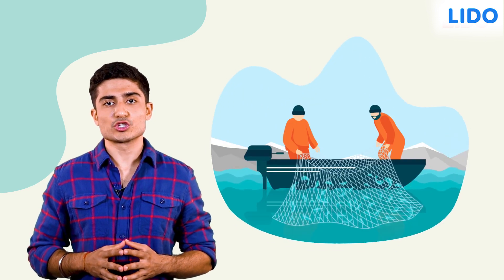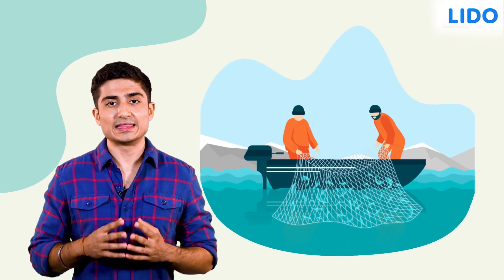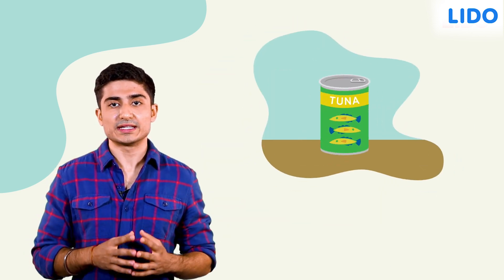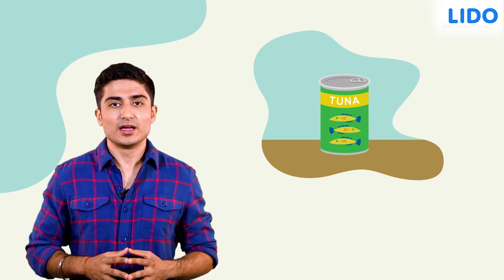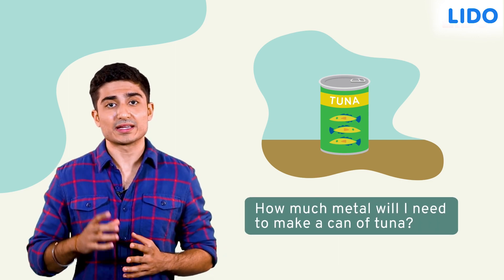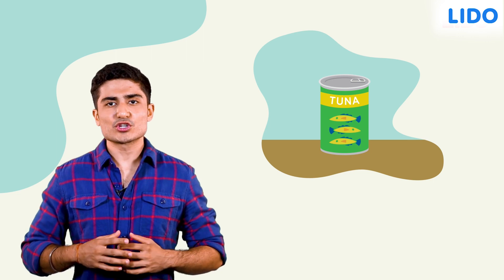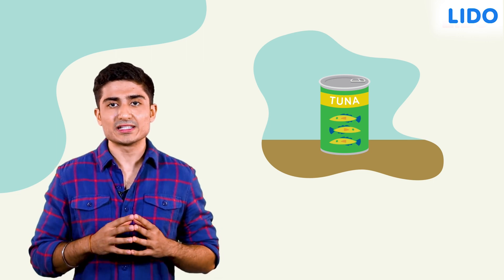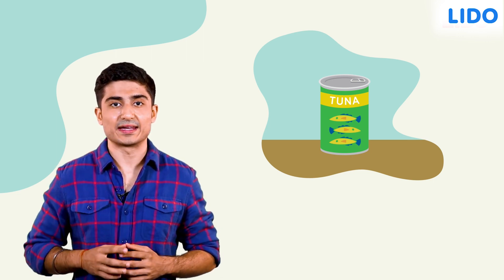I think that I could run a tuna company. I can source fresh tuna from the local fishermen. I'll then get the metal required for the containers and sell canned tuna. But how much metal will I need to make a can of tuna? Let's try and figure out the total area of the metal sheet I'll need for a single can.